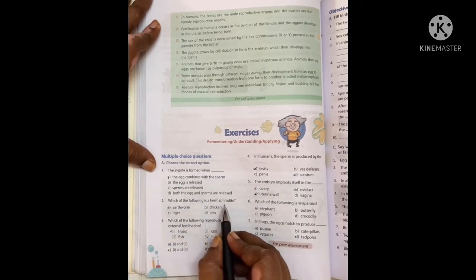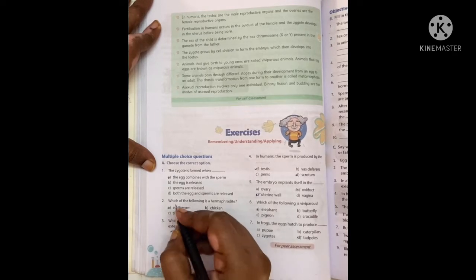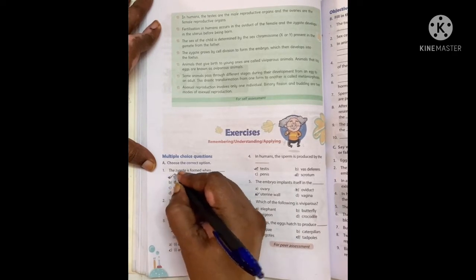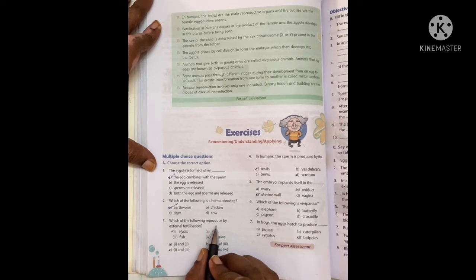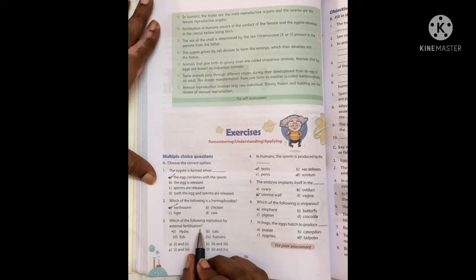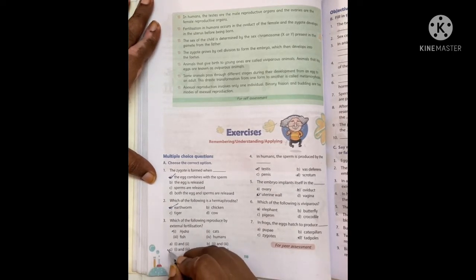Which of the following is hermaphrodite? Which of the following reproduces by external fertilization? That is fish. Answer is C.